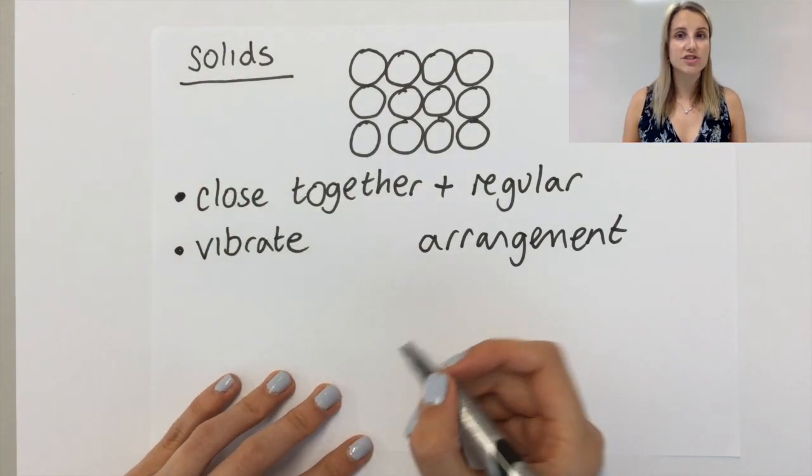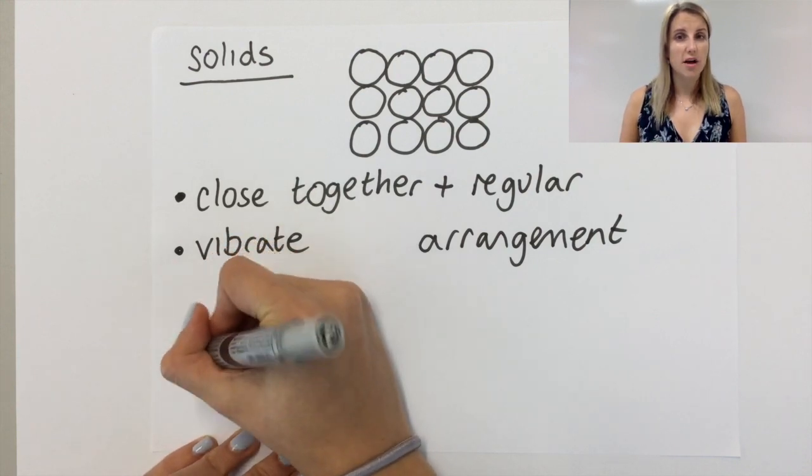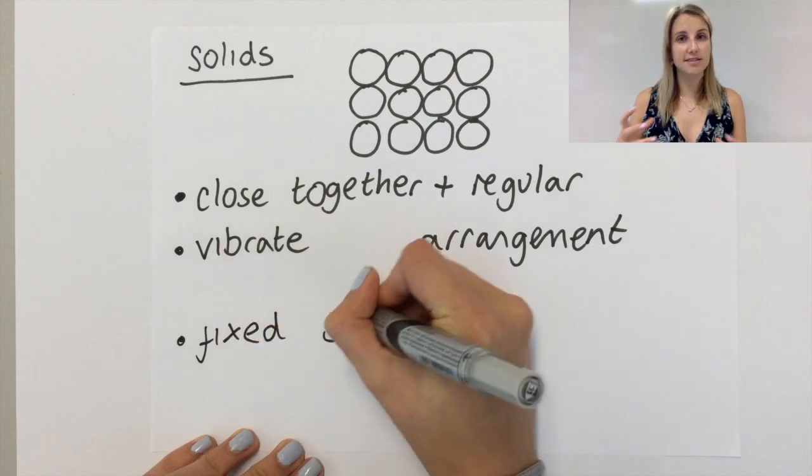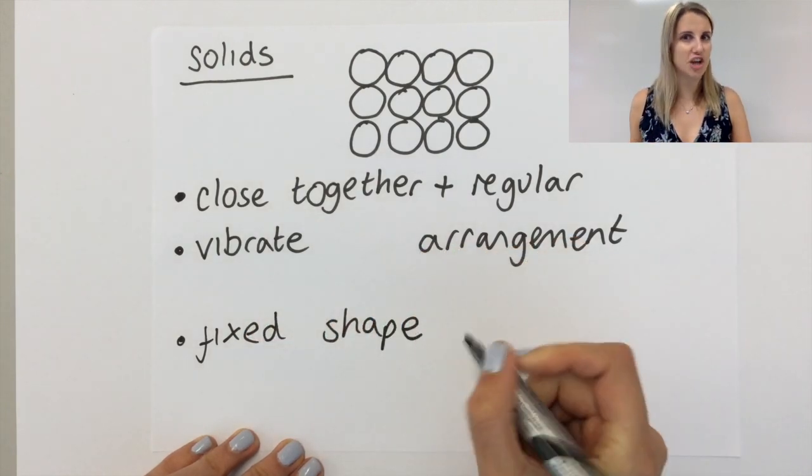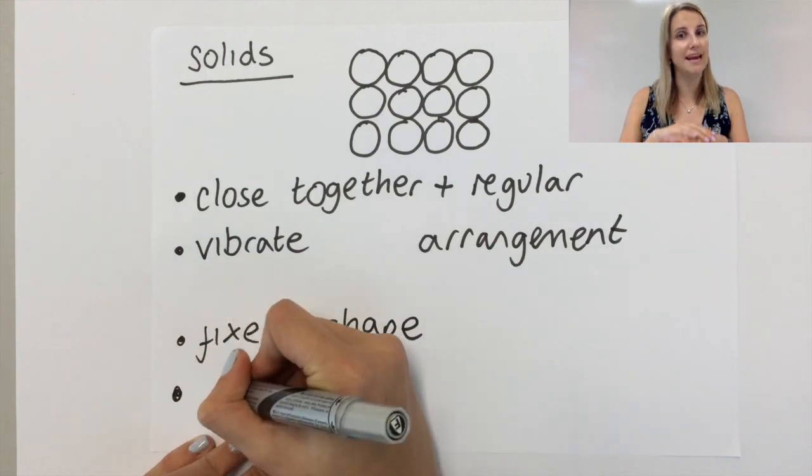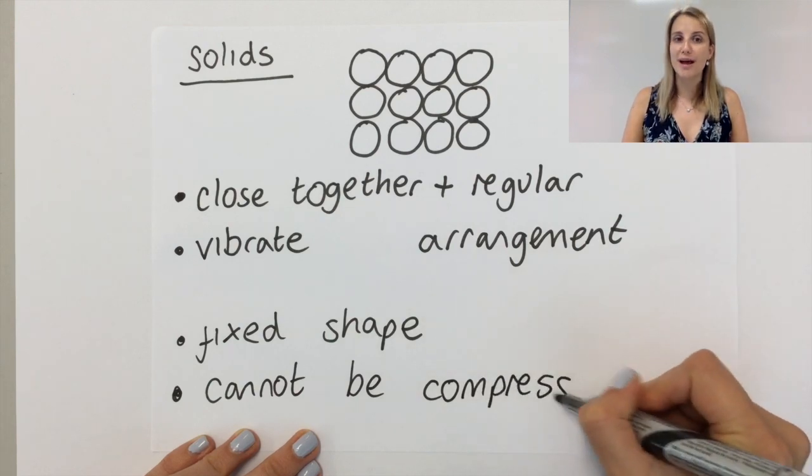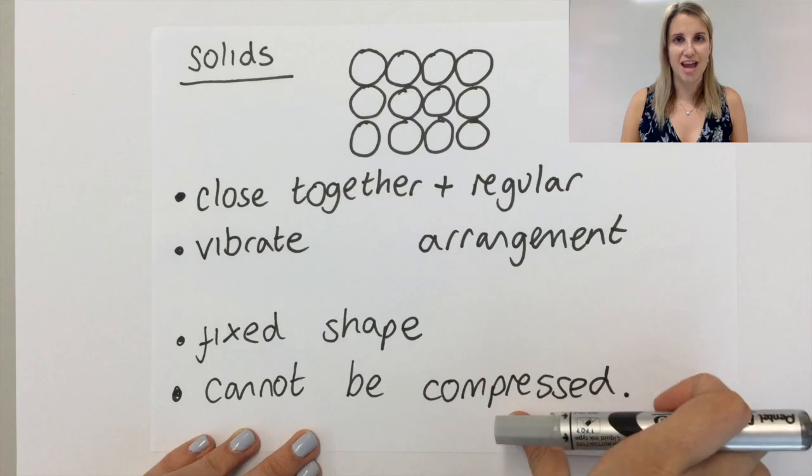Now if we talk about solids and how we know something is a solid, the distinguishing features of solids are that they are in a fixed shape. That means that if I put it in a different container then the shape of it doesn't change, it's completely fixed, it stays the same and it also cannot be compressed. So if you put a force on it the shape will not change.